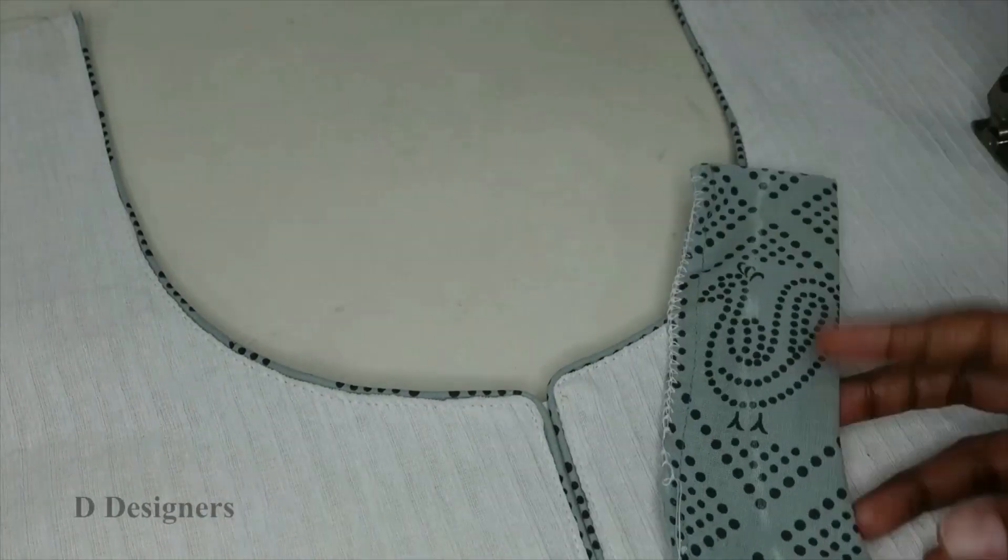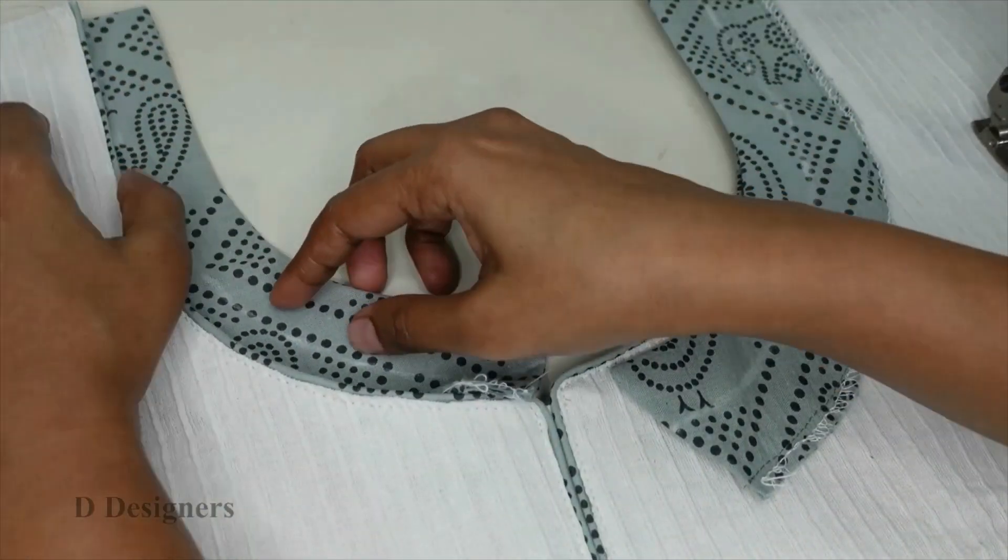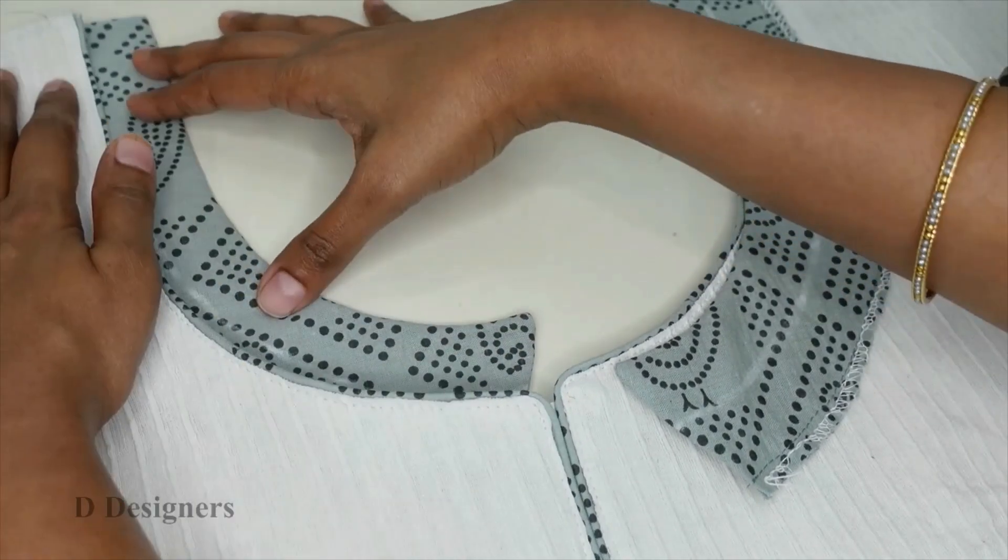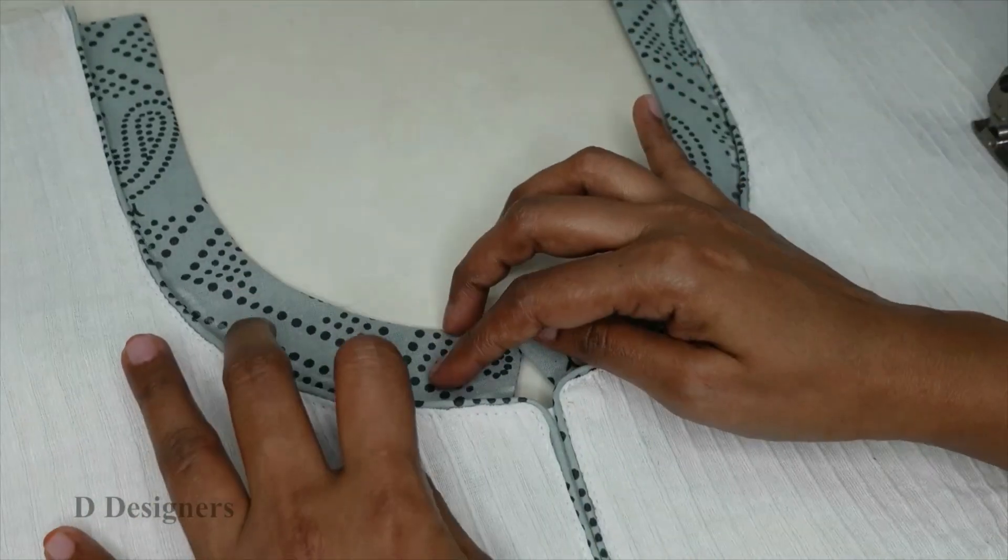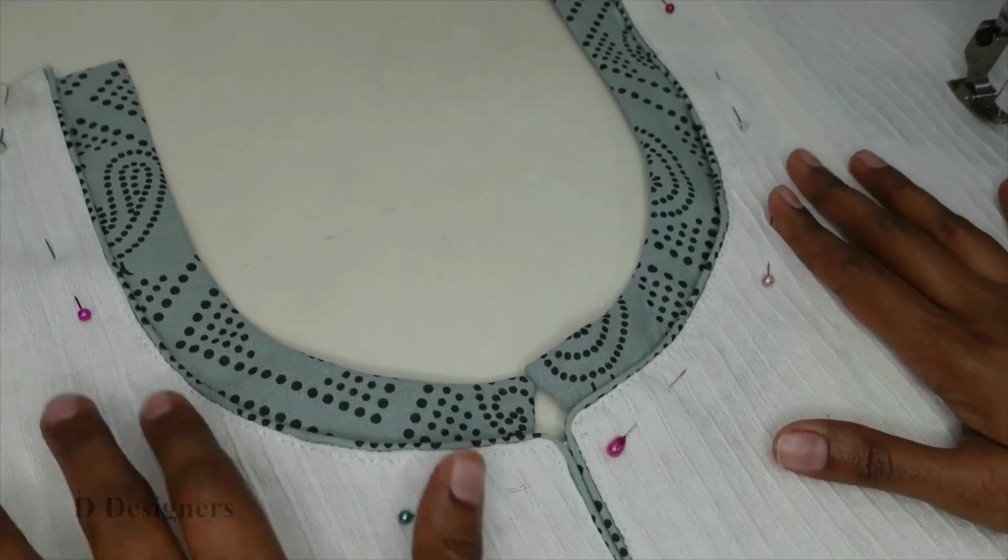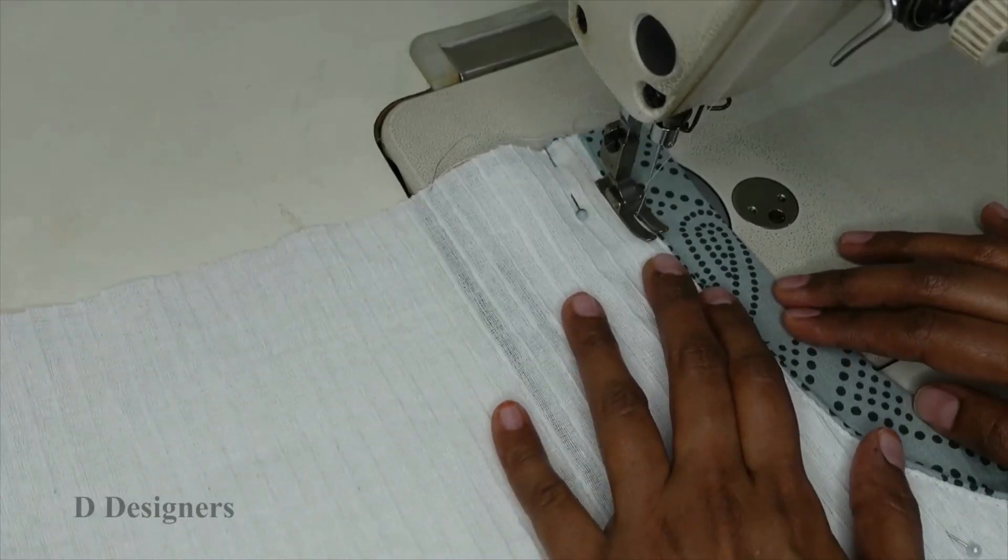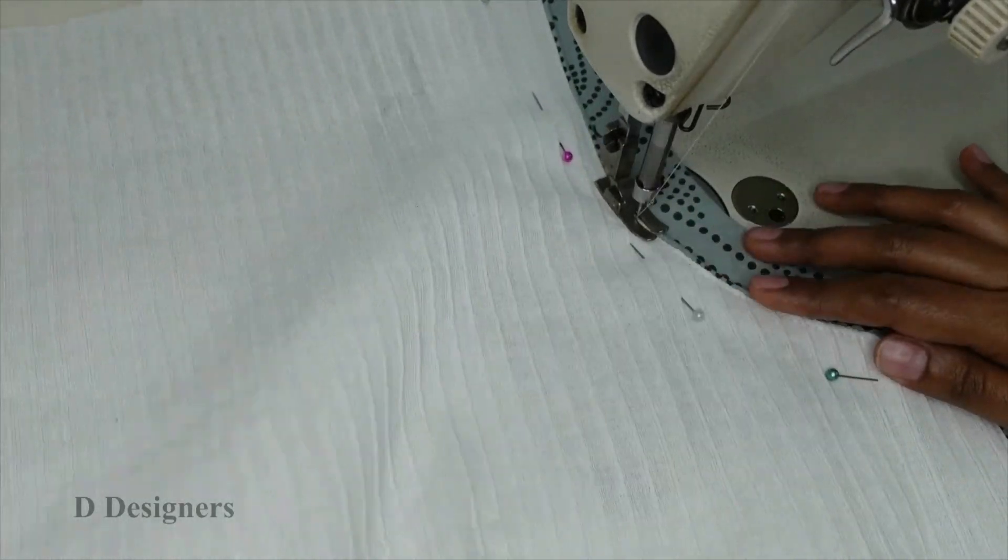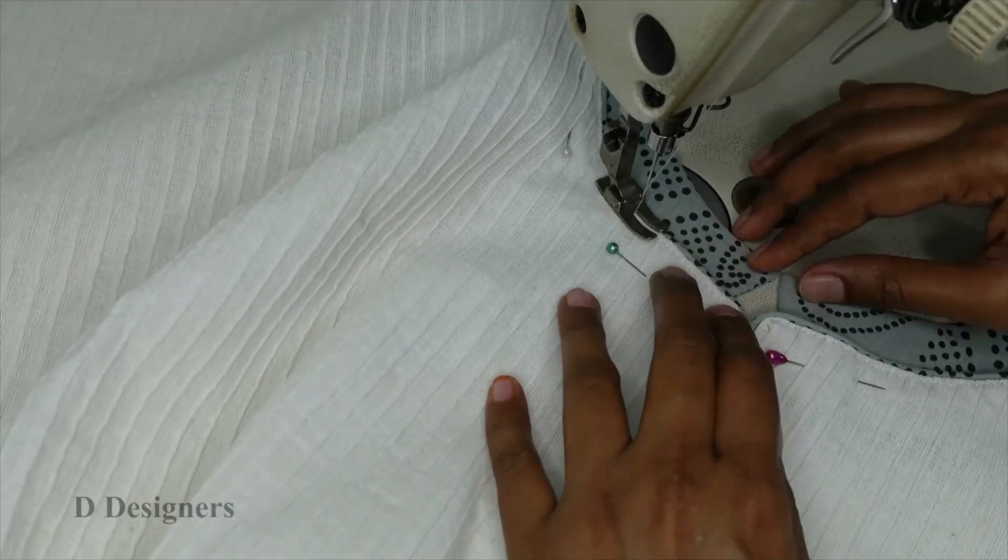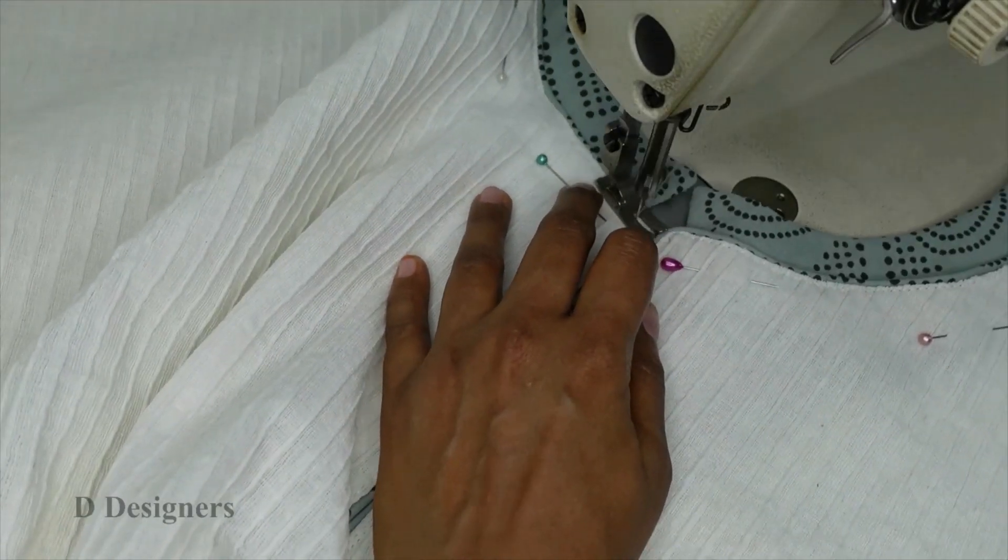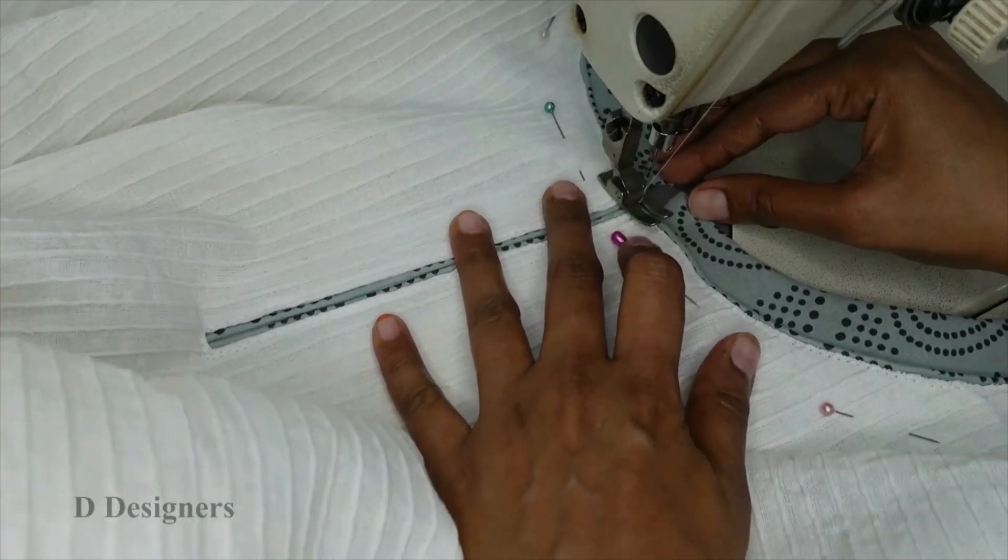Now I have closed the placket. Now I am taking the first neckline and I have marked 1 inch around the neck and I am placing under the second neckline. Keep it on place. Now I have pinned it so that it will not move. I am going to make a stitch on the neckline. Continue the same for the other side.